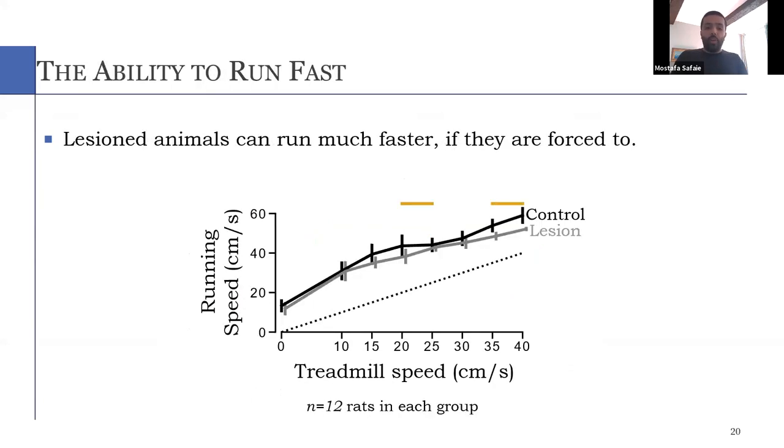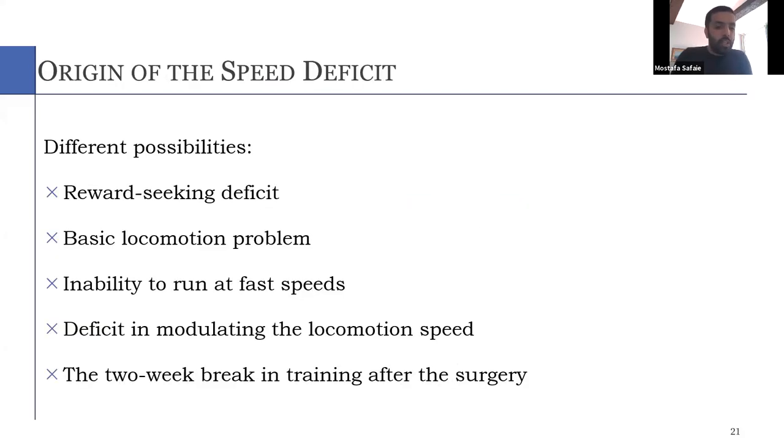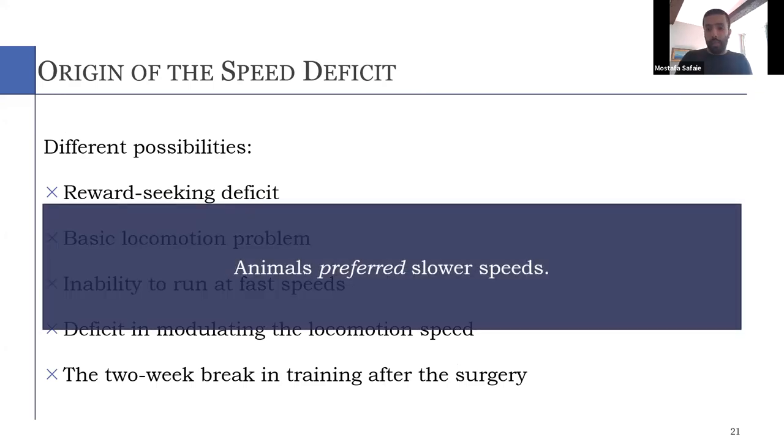And if you force the animals without any reward or anything, just we force them to run on a treadmill with increasing speed, lesion animals can keep up. Although maybe they tend to be a little bit slower, but they can keep up with much faster speeds. So none of these explanations seems to be the case.